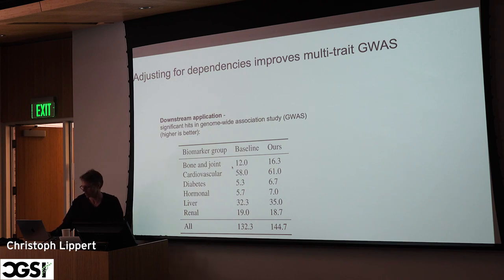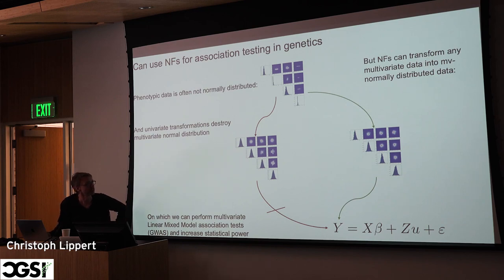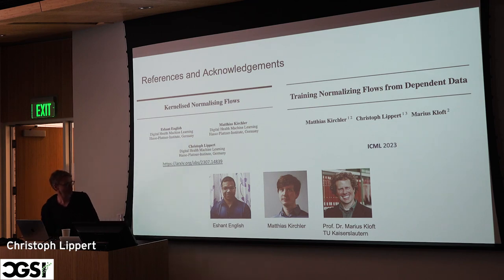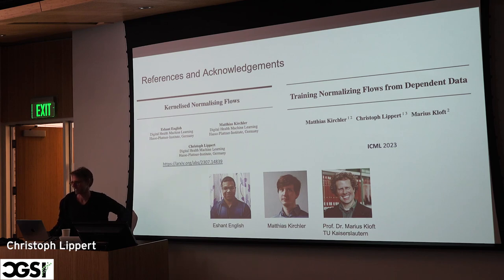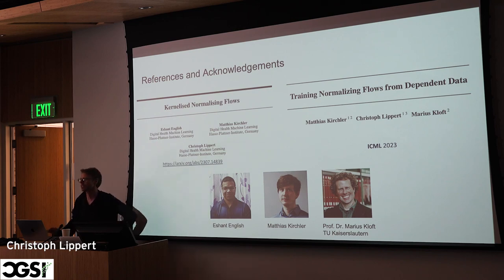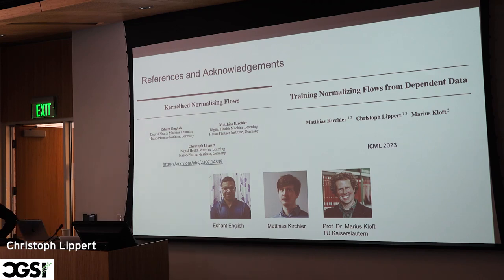To conclude: these are the two papers I talked about, with students Eshan and Matthias in collaboration with Marius Kloft from TU Kaiserslautern. The take-home messages: normalizing flows allow you to learn interesting data transformations. The main use case in genomics is that you typically want to standardize your data — learn a transformation — especially for multivariate transformations. When standard non-parametric statistics don't work, you can think of a normalizing flow. Thank you.